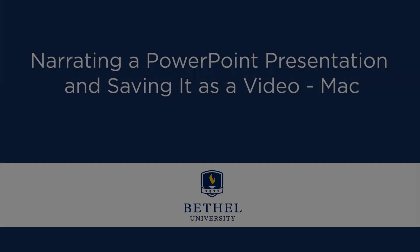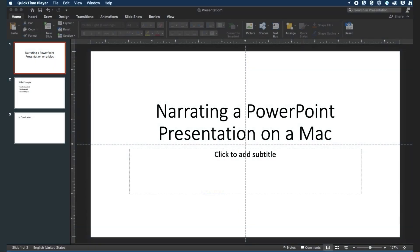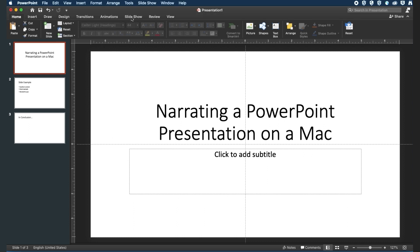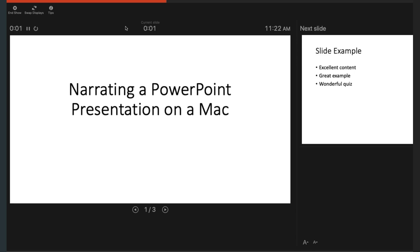In this tutorial, I am going to walk you through the process of narrating a PowerPoint presentation and then saving it as a video on a Mac. The first thing you will need to do is either create a new presentation or open an existing one. Once your presentation is ready, navigate to the Slideshow tab. When you are ready to record, click on the Record Slideshow button. This will then bring you to the recording window.